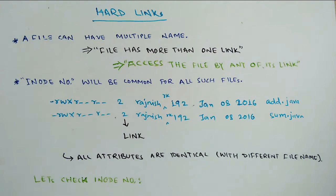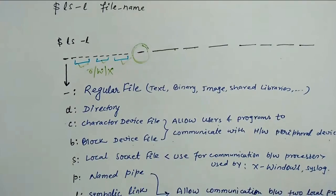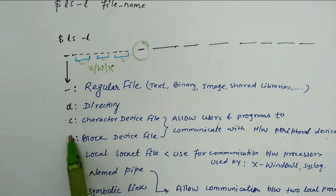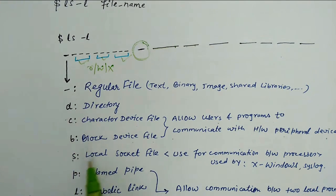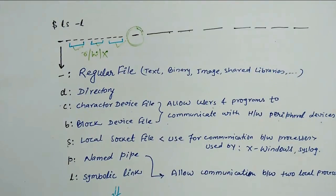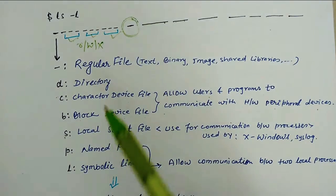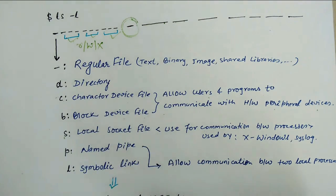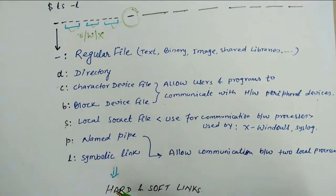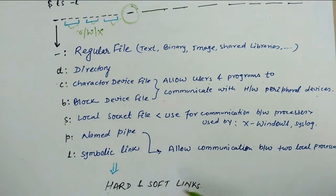In the previous video lecture, we discussed seven fundamental file types: regular file, directory file, character device file, block device file, local socket file, named pipe, and symbolic link. We have already discussed six different file types. But today we are going to discuss hard link and soft link that comes under symbolic link.